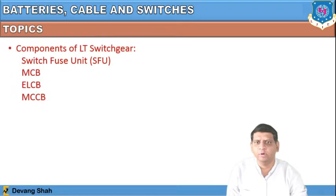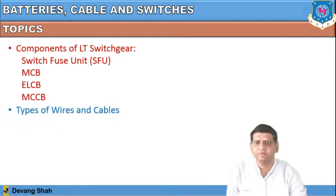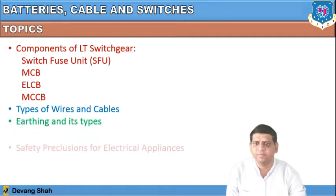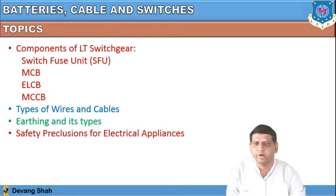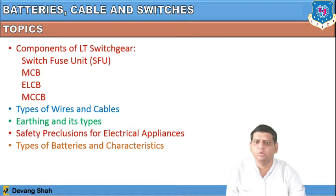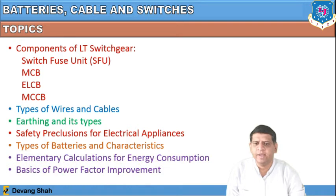In this chapter we learned about components of low-tension switchgear: switch fuse unit, MCB, ELCB, MCCB. We then discussed types of wires and cables, earthing and its types, safety precautions for electrical appliances, and types of batteries and characteristics. Today we are going to learn about types of batteries, their characteristics, elementary calculation for energy consumption, and basic power factor improvement.